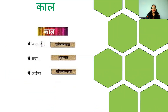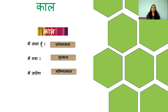For example, main jata hoon — so when is it happening? It is happening at present — Vartaman kaal. Main gaya — gaya is already done, so this happened in the past tense, that is Bhoot kaal. And then the other one is Bhavishya — future: main jaunga. There is a possibility that I will go there, so main jaunga is Bhavishya kaal.